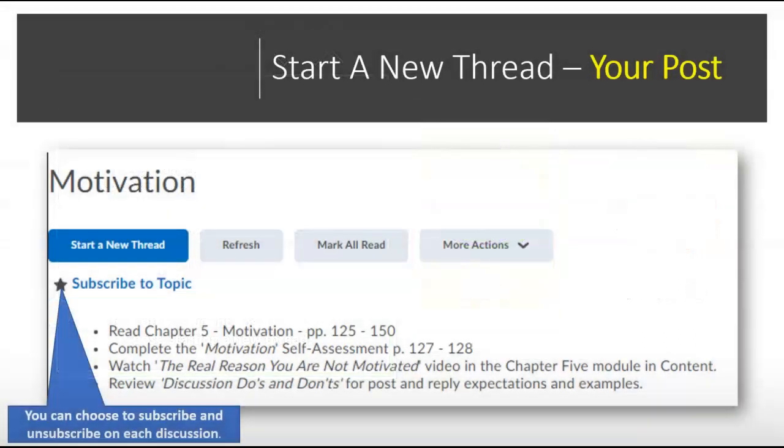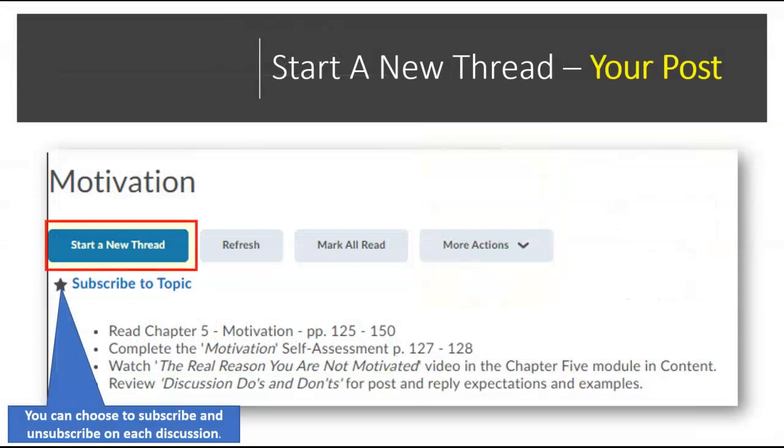To make your original post to the question prompts, choose Start a new thread. If you do not see that option, you do not have access either because you missed the deadline or are trying to gain access before you are allowed. Some instructors allow you to view discussions to give you a head start, but you may only have a certain window of time when posts and replies are allowed.